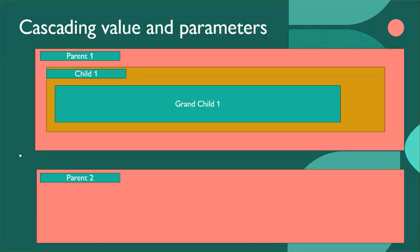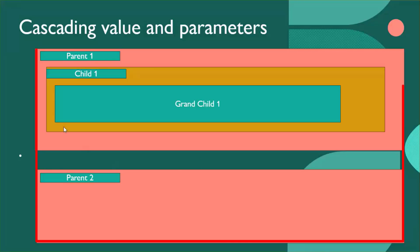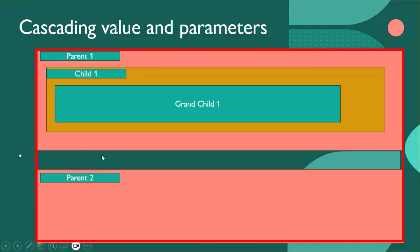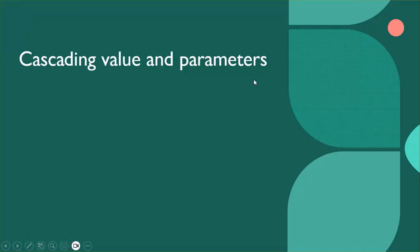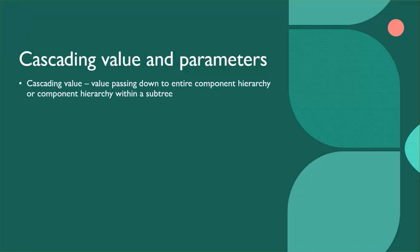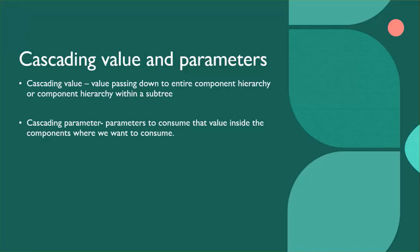We might have a requirement to pass a single value to an entire component hierarchy or a component hierarchy within a subtree. To summarize: cascading values are the values that we pass down to an entire component hierarchy or component hierarchy within a subtree, and cascading parameters are the parameters we use to consume that value inside the components.